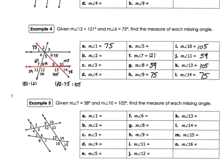Now we need to find angles two, three, four, and five. Using the parallel lines with the other transversal — angle four is alternate interior to angle eight, so angle four is 59. Then since three is vertical to four, angle three is also 59.